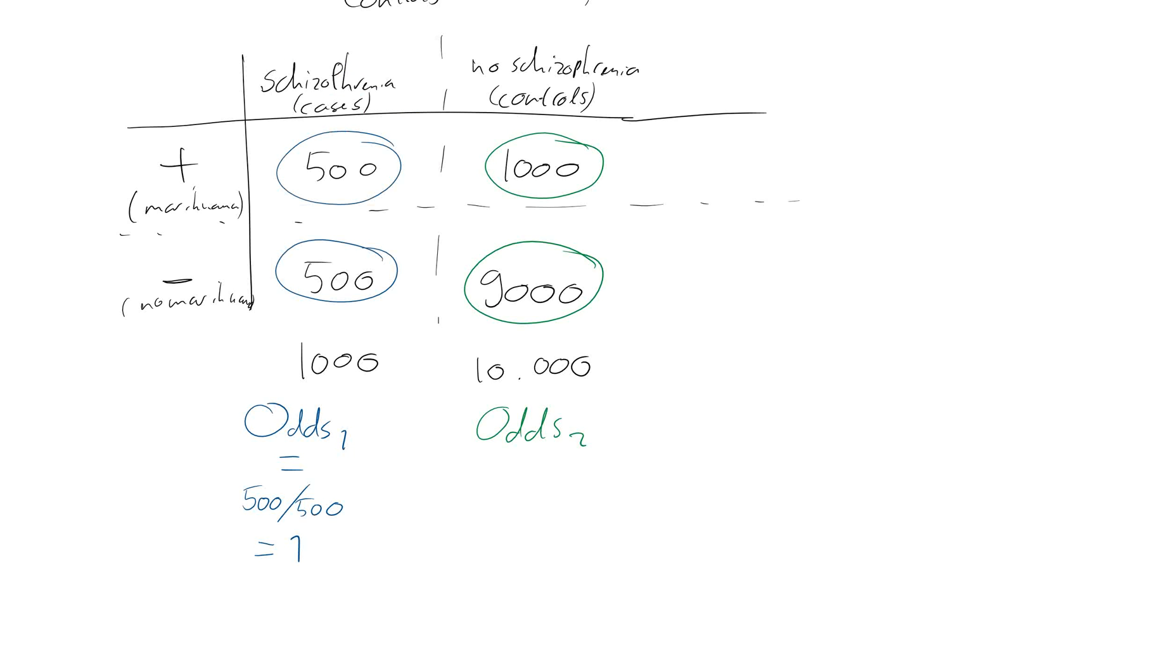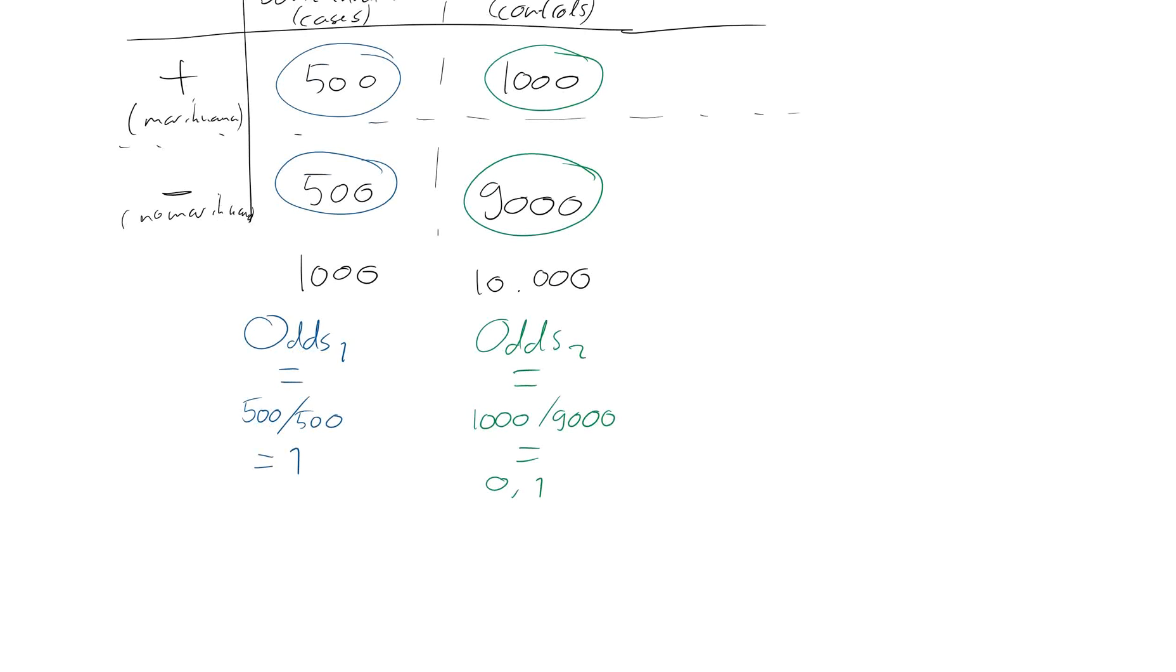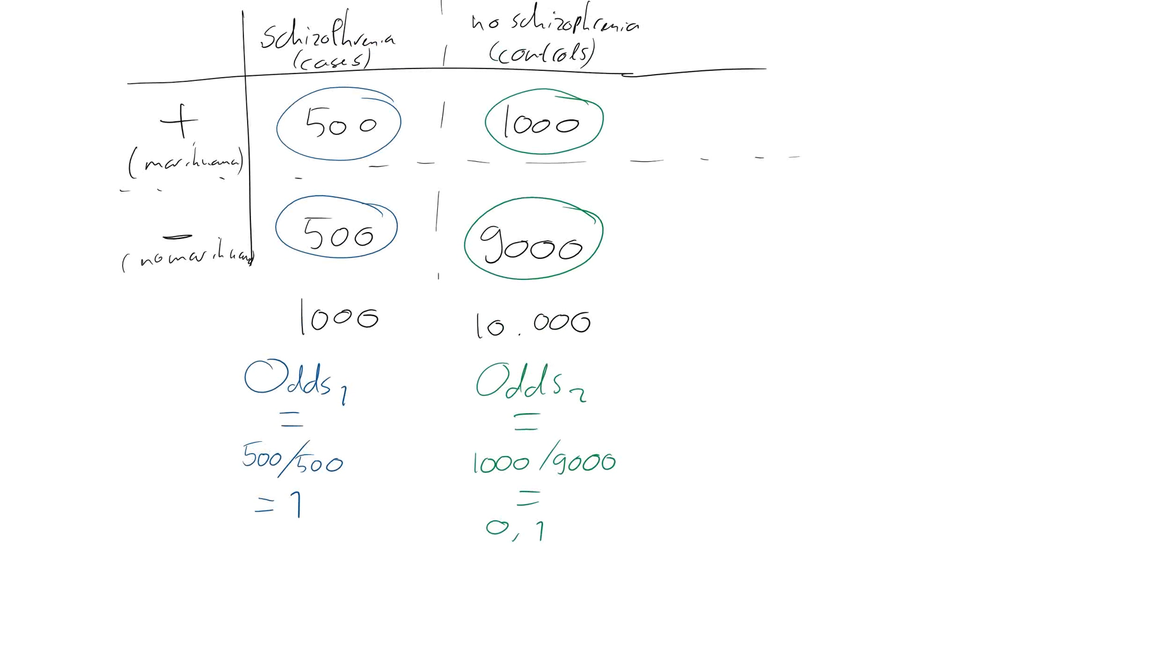And odds 2 is the odds that a non-schizophrenia patient used marijuana, which is 1,000 divided by 9,000, let's say 0.1. Notice how you divide 500 by 500 and not by 1,000. 1,000 by 9,000 not by 10,000. Notice that. It's very important. This is often done wrong. Because this is what the odds means. It means the odds that a non-schizophrenia person used marijuana versus the odds that he did use marijuana. So that's 1,000 divided by 9,000.